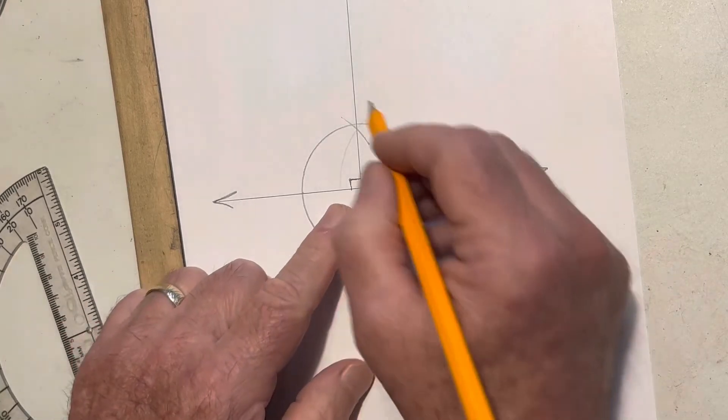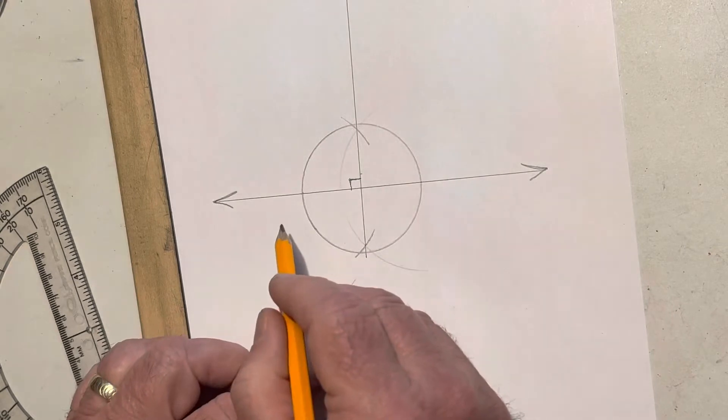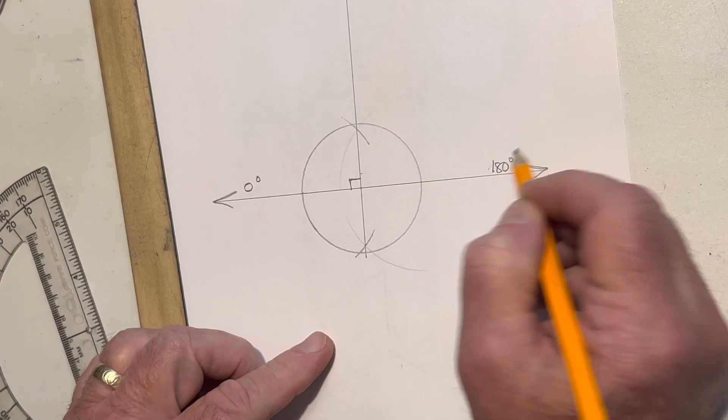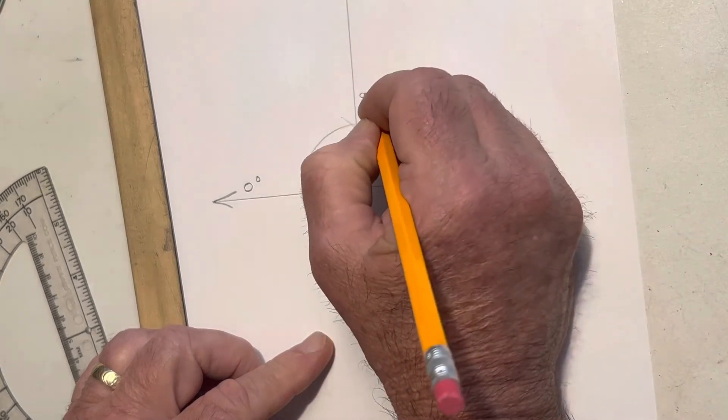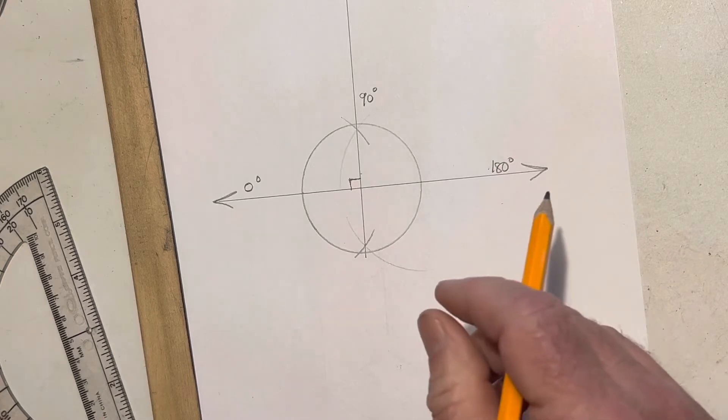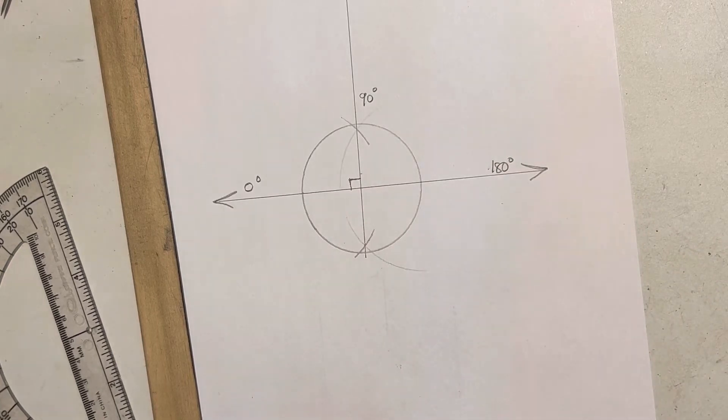If I were to say, let's start over here, this would be zero degrees. This is 180 degrees. Now here is 90 degrees exactly, one-half.